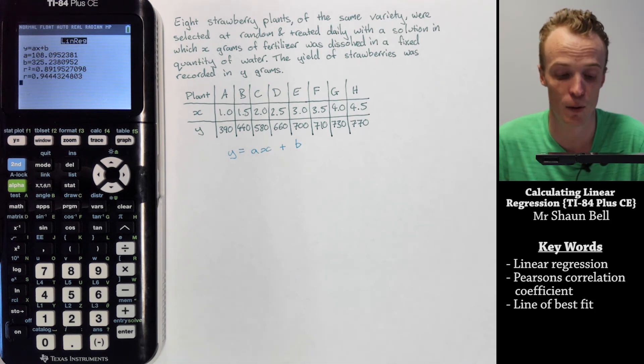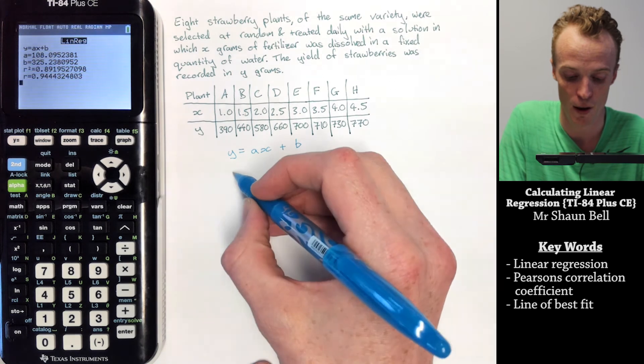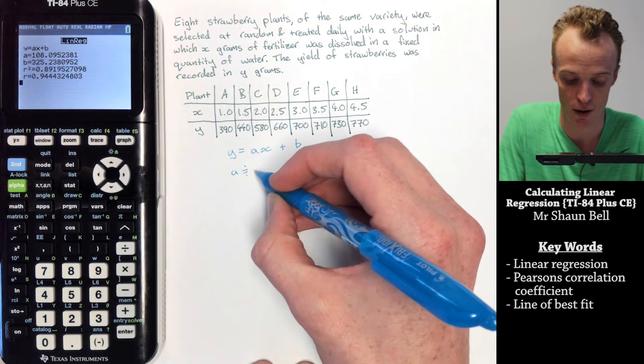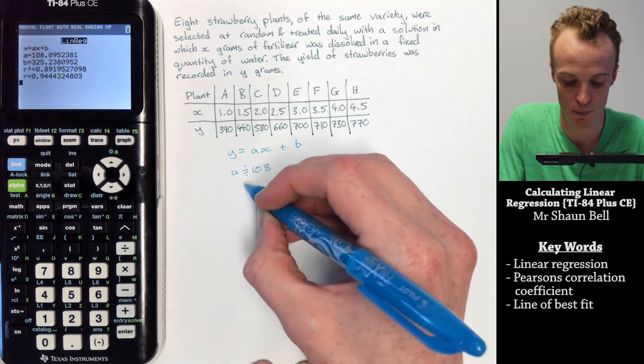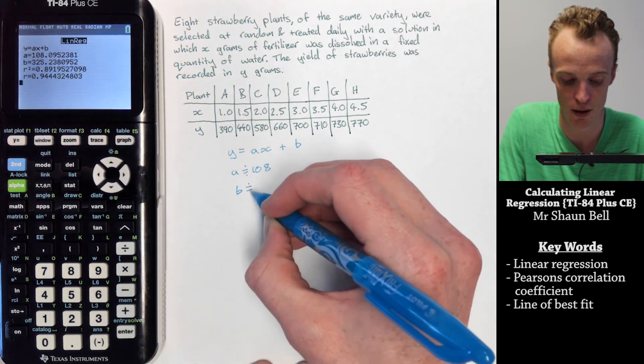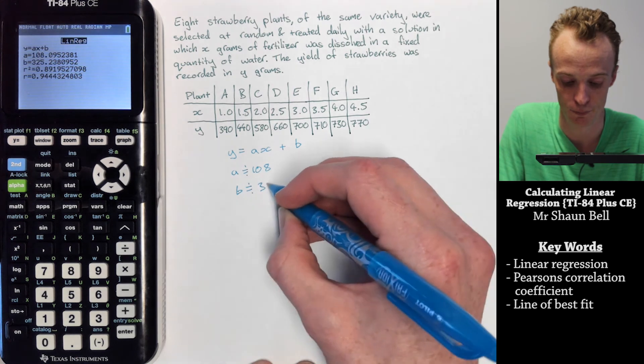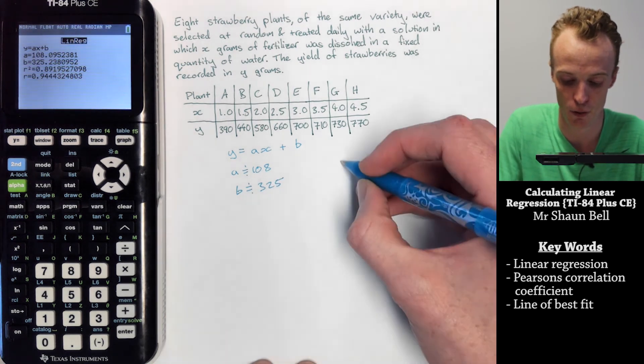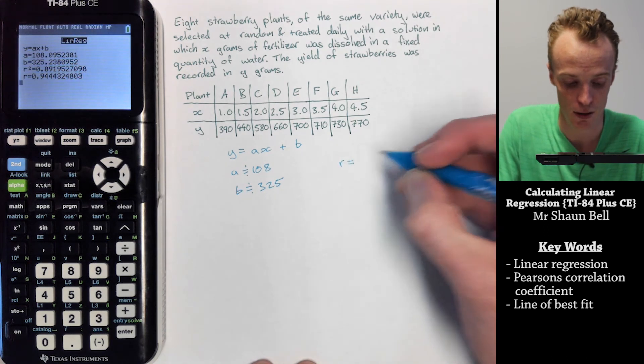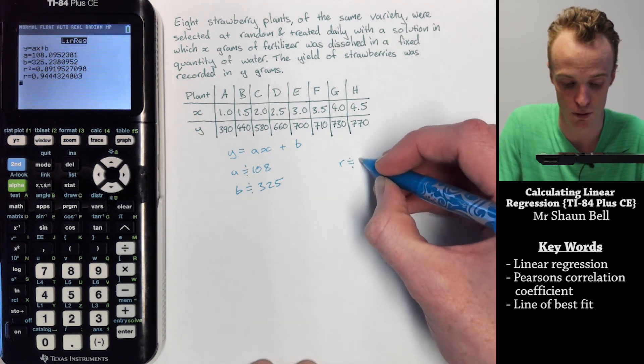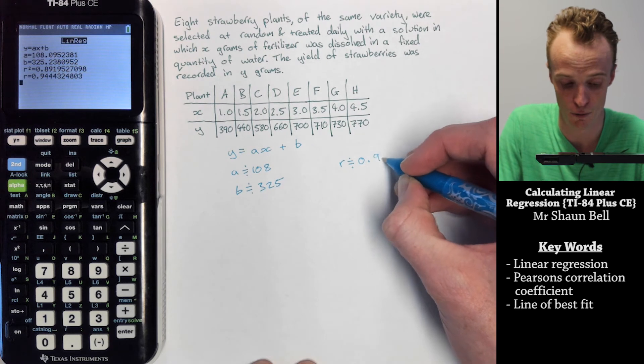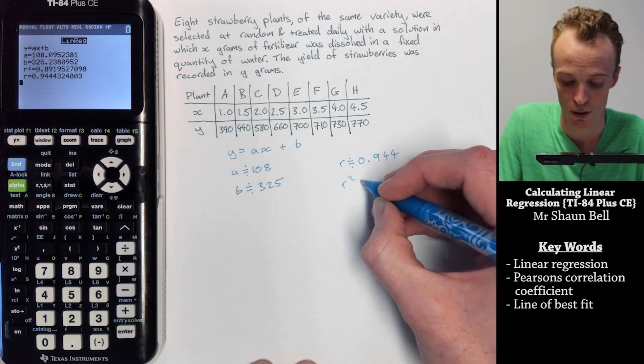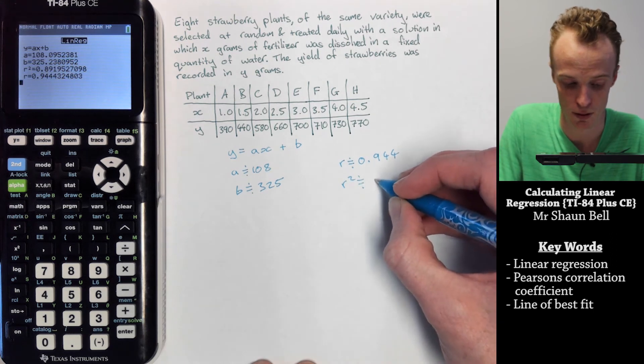So a is our slope, b is our y-intercept, where a is approximately equal to 108 and b is approximately equal to 325. We also can see here that our Pearson's coefficient r is approximately equal to 0.944, and our r squared value is approximately equal to 0.845.